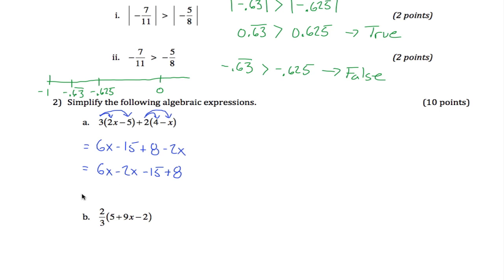You don't need to do this in between step. You could jump all the way from here down to here if you want. But 6 minus 2 gives us 4x. And negative 15 plus 8, a little bit trickier. That ends up being negative 7. So we get 4x minus 7 as our answer.